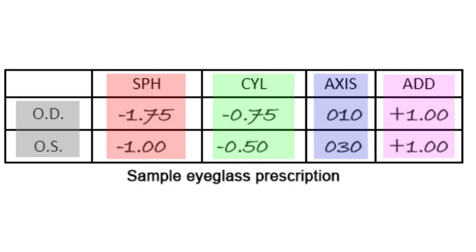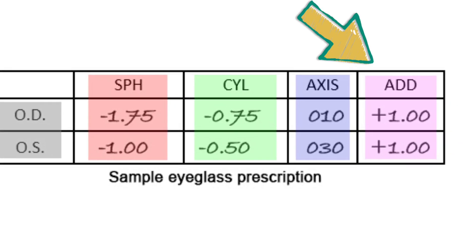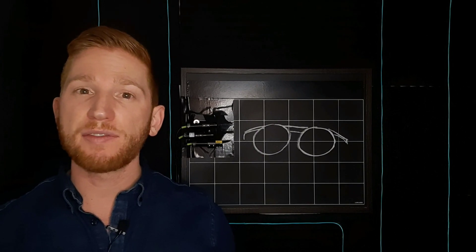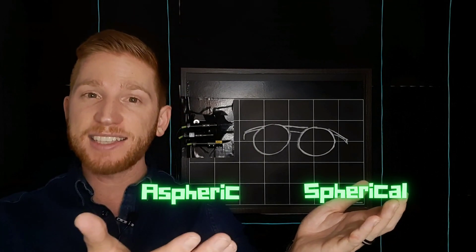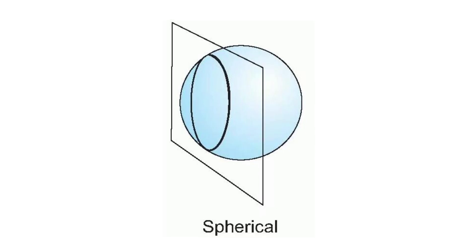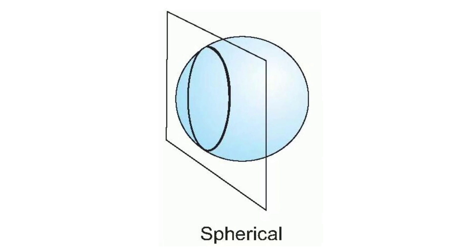The prescription for multifocal lenses will have numbers in the add section. For all of the lens types we've talked about so far, you can have either spherical or aspheric lenses. Spherical lenses are simply parts of a sphere, meaning they have one continuous curve across them.